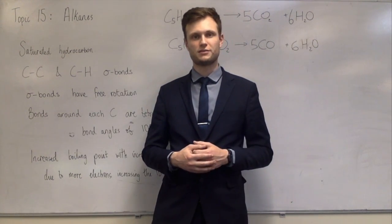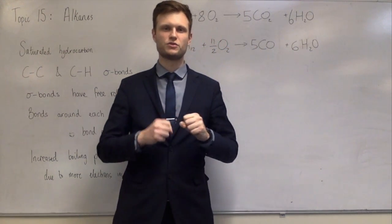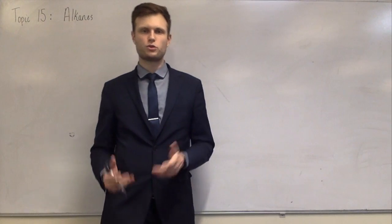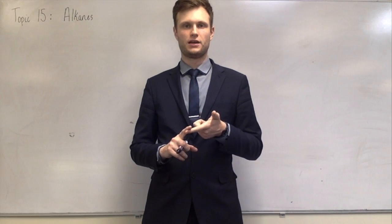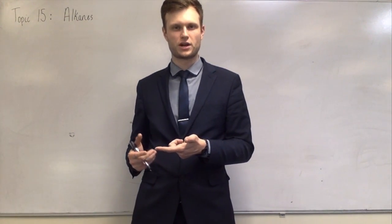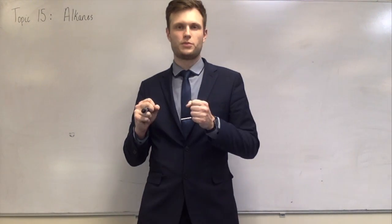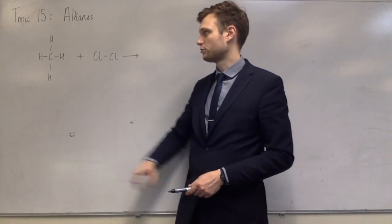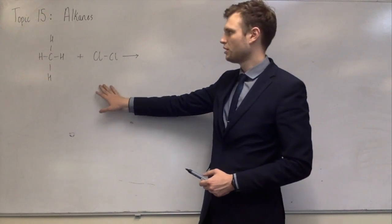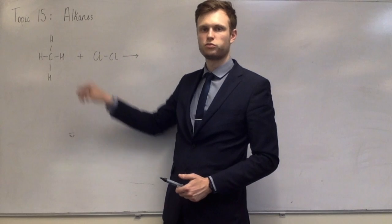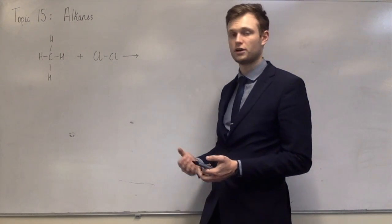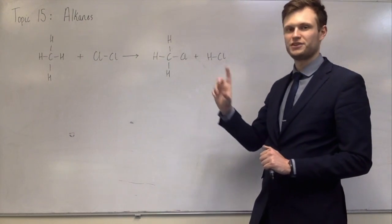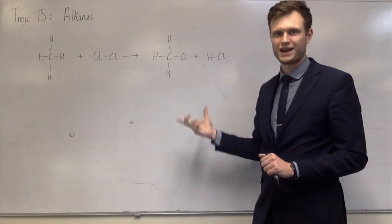A reaction mechanism shows you what happens to each of the atoms and molecules in a chemical reaction — not just the reactants and products, but every step in between. Free radical substitution is a reaction between an alkane and a halogen. It's called radical because it contains radicals, which are species with an unpaired electron. It's called substitution because one of the hydrogens from the alkane is substituted with one of the halogens — they swap over. One example is methane reacting with chlorine, producing chloromethane and hydrogen chloride. This is the overall equation.